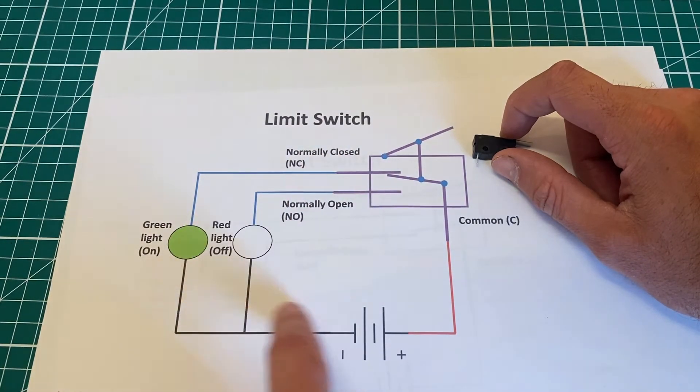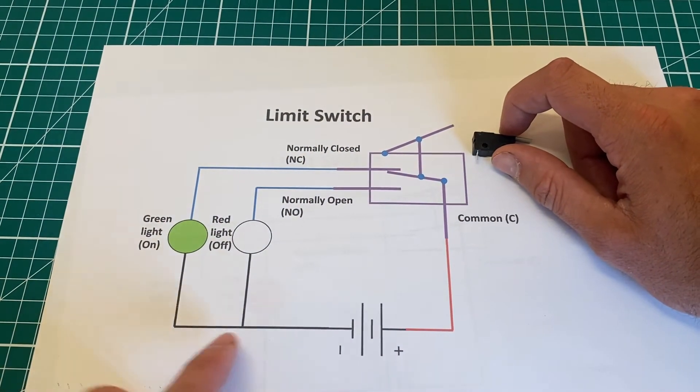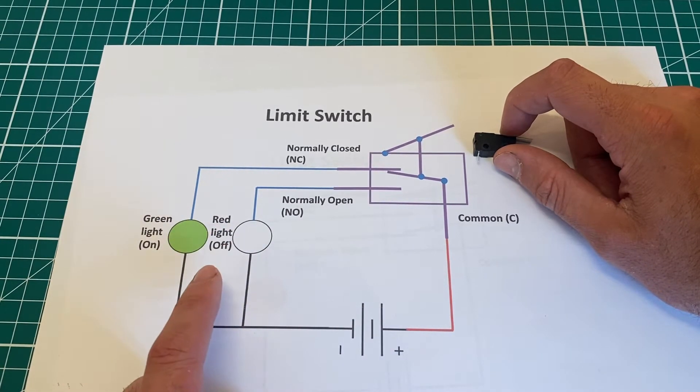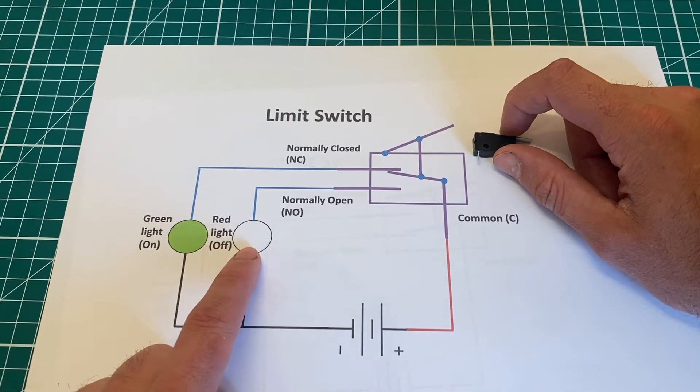Now if we look in the context of this circuit itself, you can see we have a battery, so a power source of some kind. We have our plus going up to our limit switch, and then we have our minus going to two separate bulbs: one green and one red.